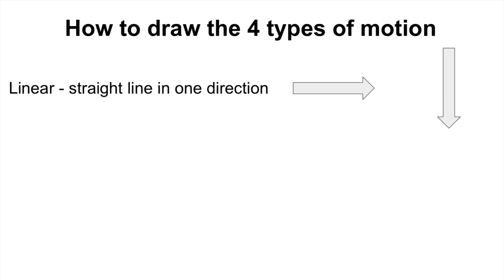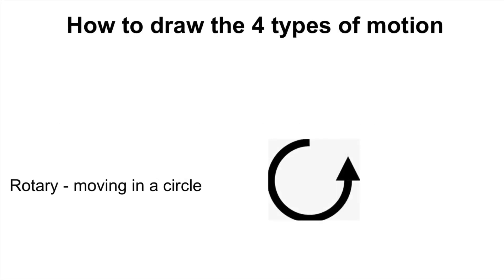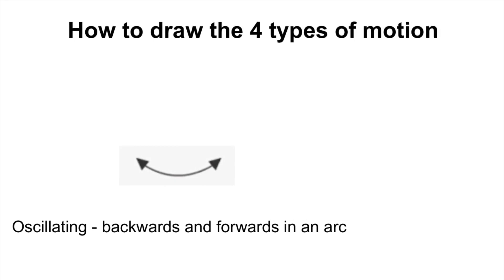One last thing about the four types of motion is that you might be expected to draw or recognise the symbols for them — so here they are. Now that you've mastered the four types of movement or motion, we're going to move on and learn about levers.